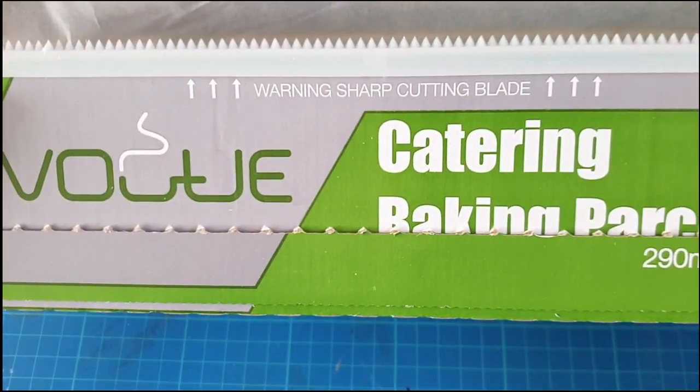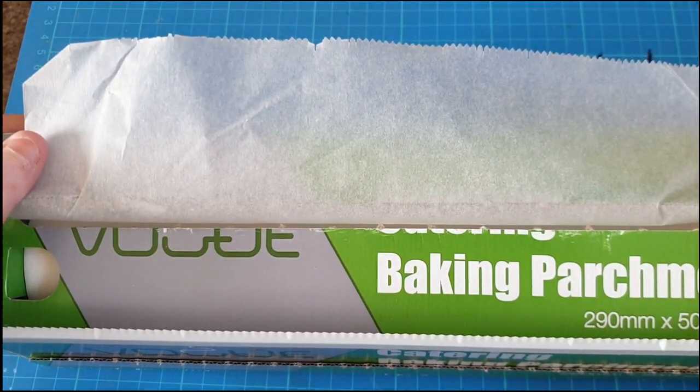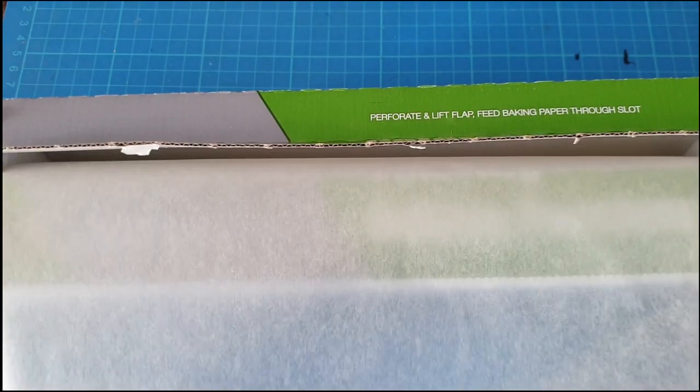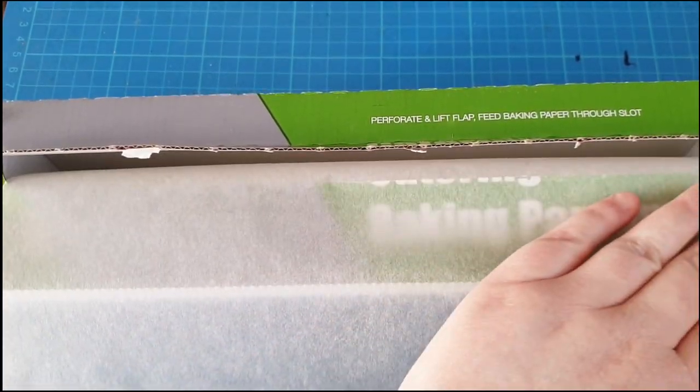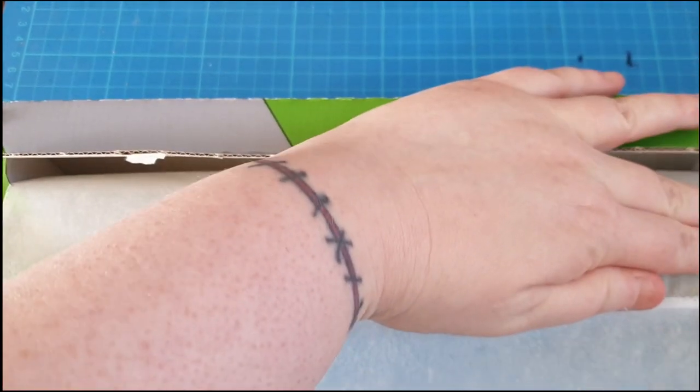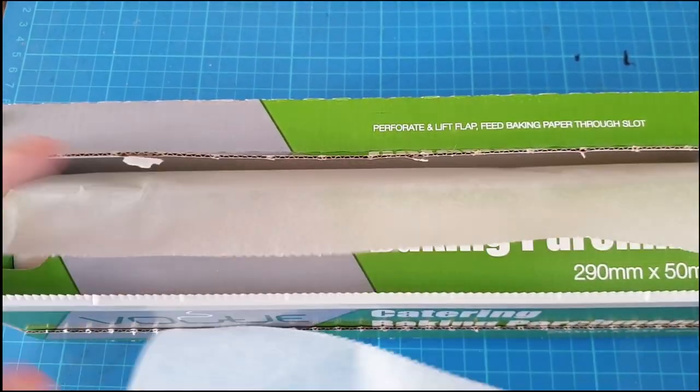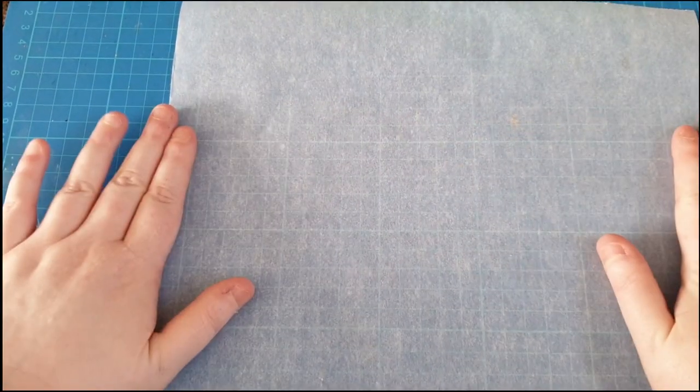So moving on to our actual palette. This is baking parchment. I bought it off Amazon, I think it was about four quid. There's a lot in there so I'll be using it to cook as well, which is nice. It's a huge pack and it's kind of handy.